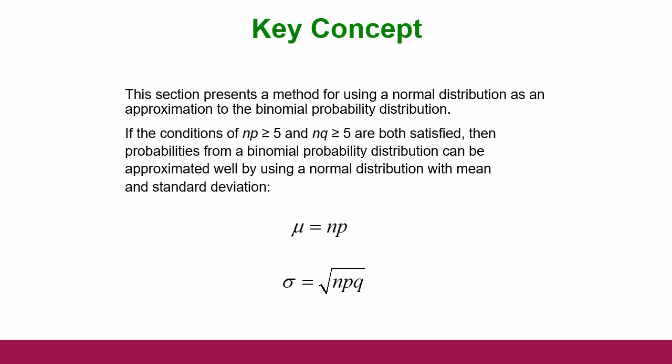Anytime you have proportional data — counting data — you're going to use the binomial distribution if you can categorize them into two categories only. If you have continuous data, you're going to be using the normal curve more often than not. You'll be using the t-curve and other things like that, but you get the idea.